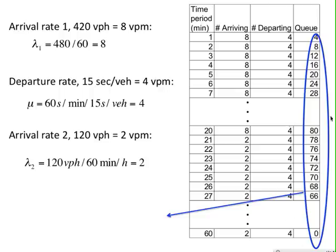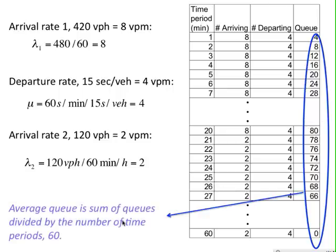So we can calculate the average queue, you can see from the table. If I just add these up, these are the queues each minute. If I add them up and divide by the number of minutes, I get an average queue.